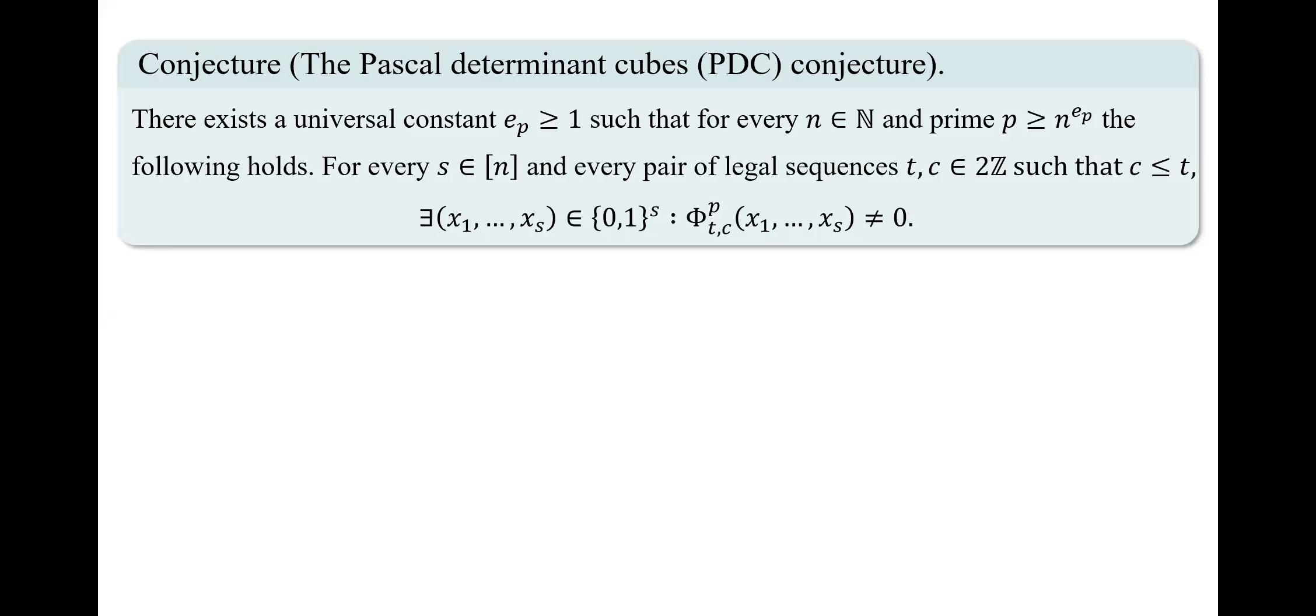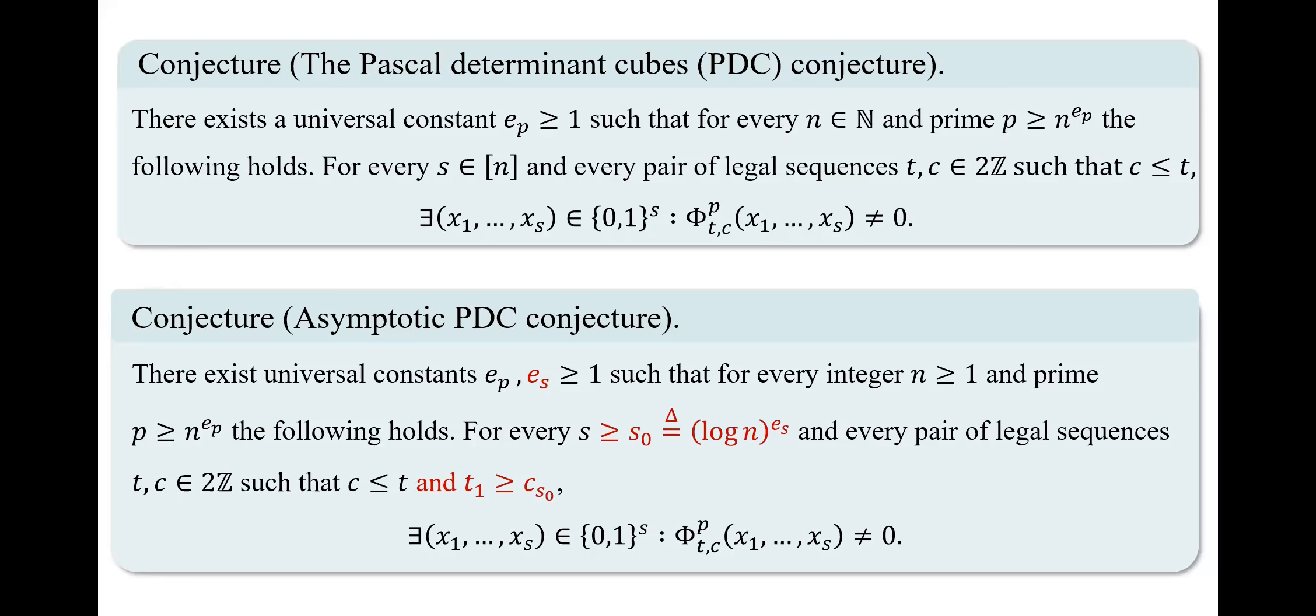We restricted the pairs of legal sequences to have even entries, since otherwise F_t_c has many trivial roots we wish to avoid. In addition, even though we don't have a reason to believe that some irregularities occur for small values of s, we put forth a relaxation of the PDC conjecture that avoids these irregularities if they exist. The changes are highlighted in red. In our work, we present a construction that relies on the correctness of the asymptotic PDC conjecture. If the conjecture holds, our candidate construction provides an asymptotically good tree code.